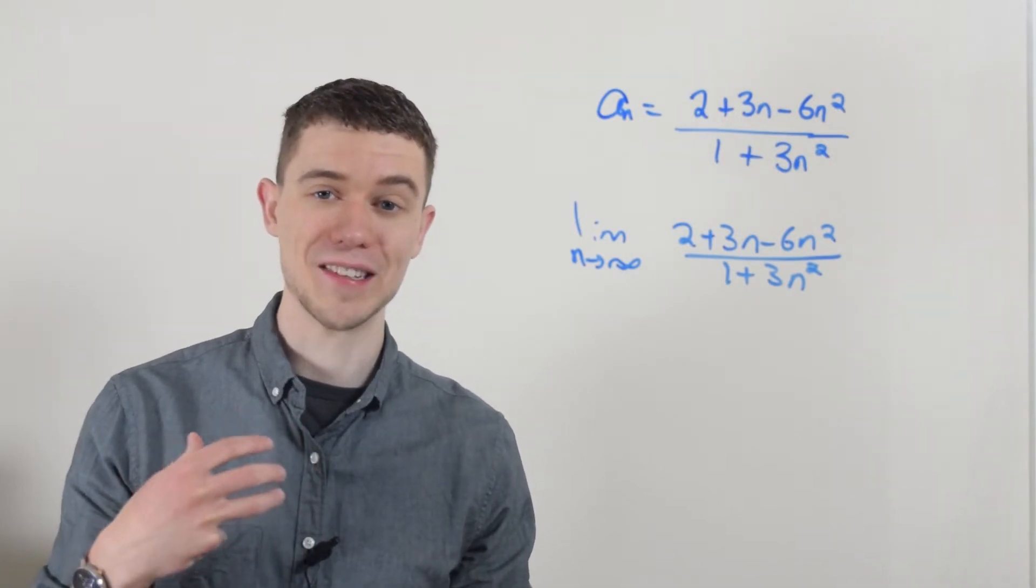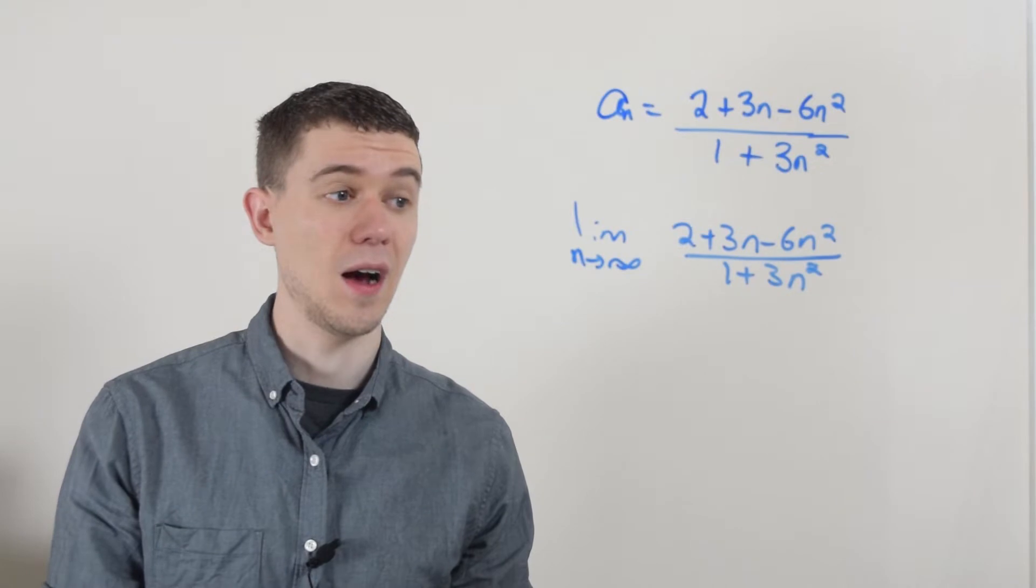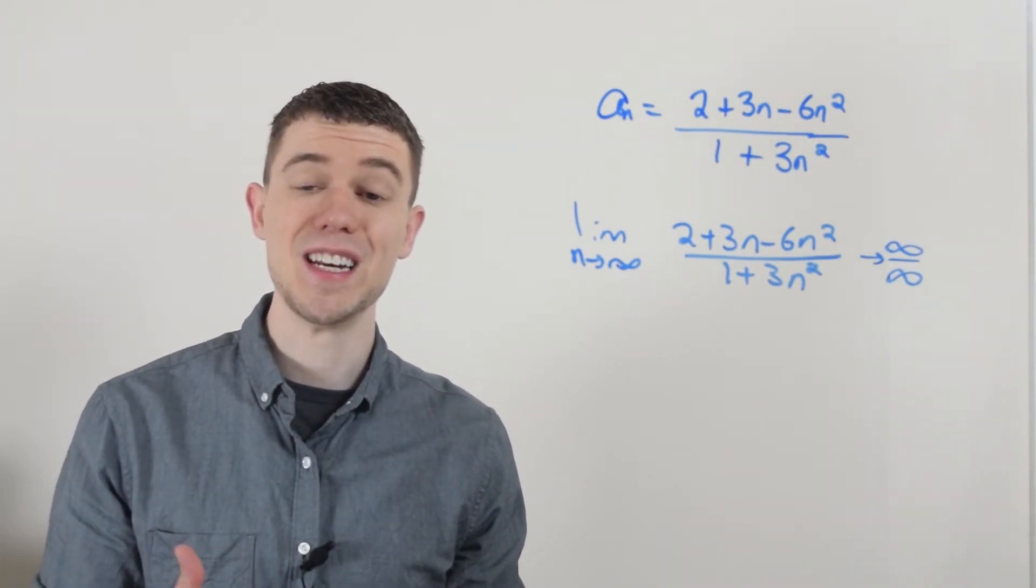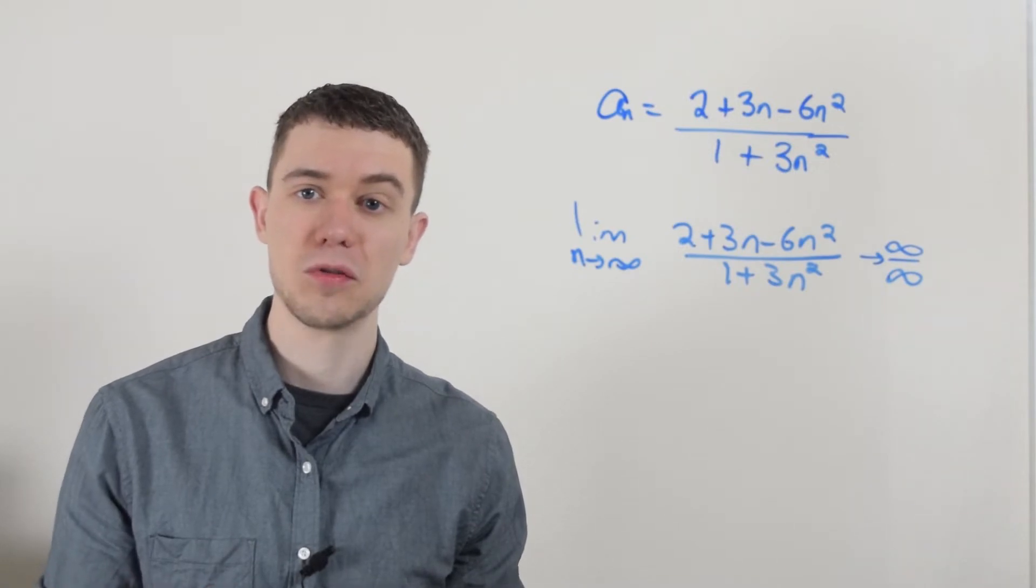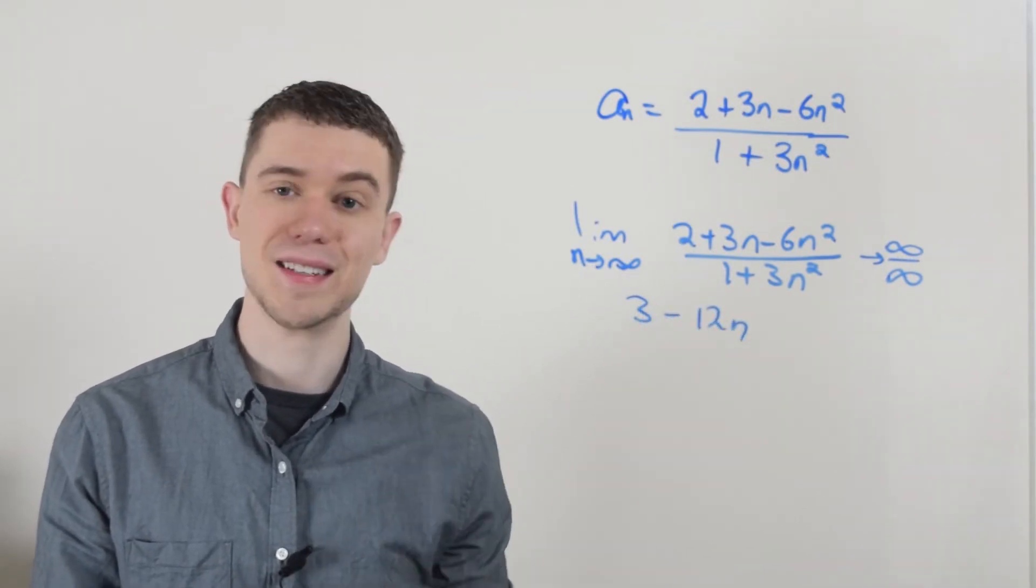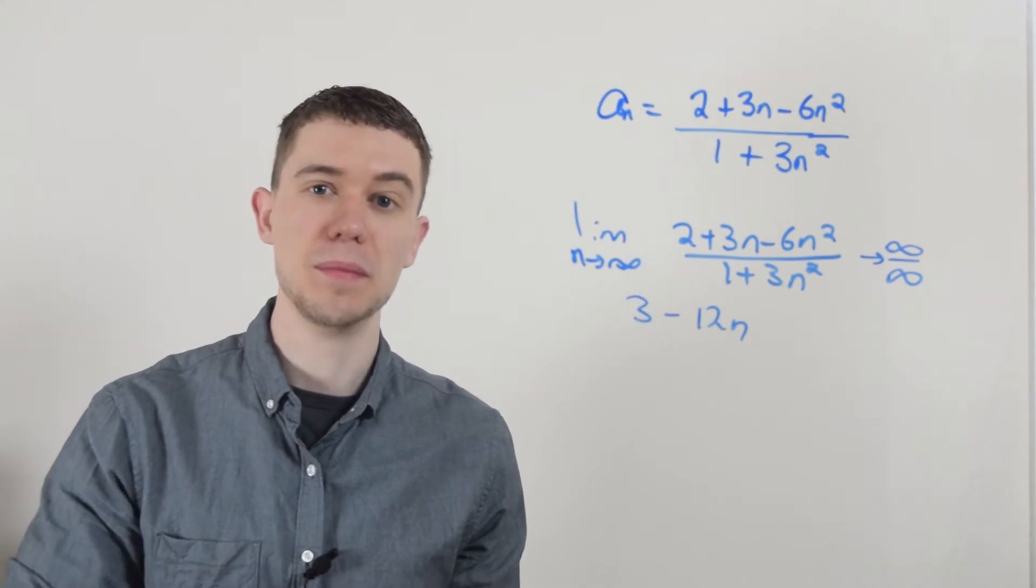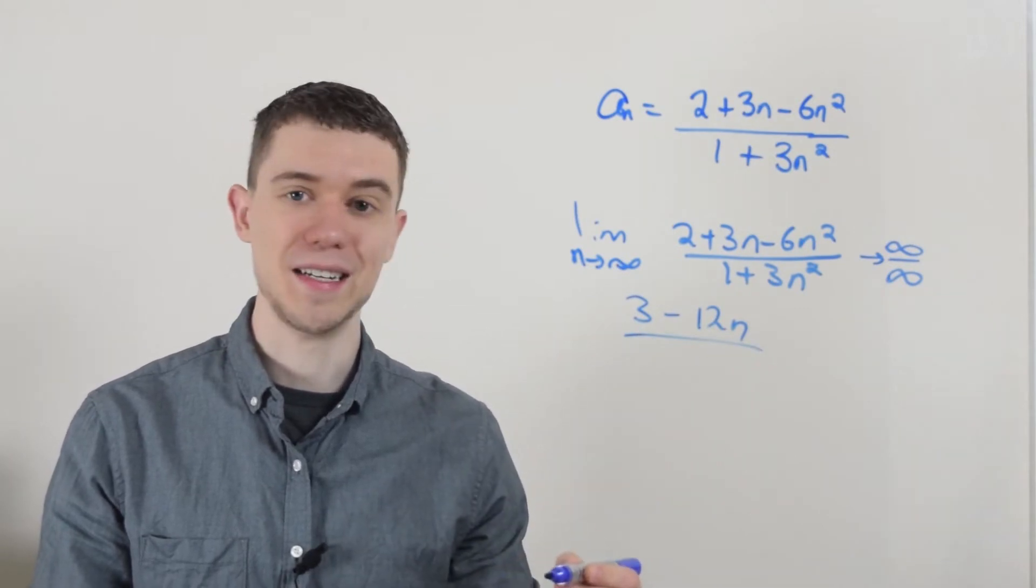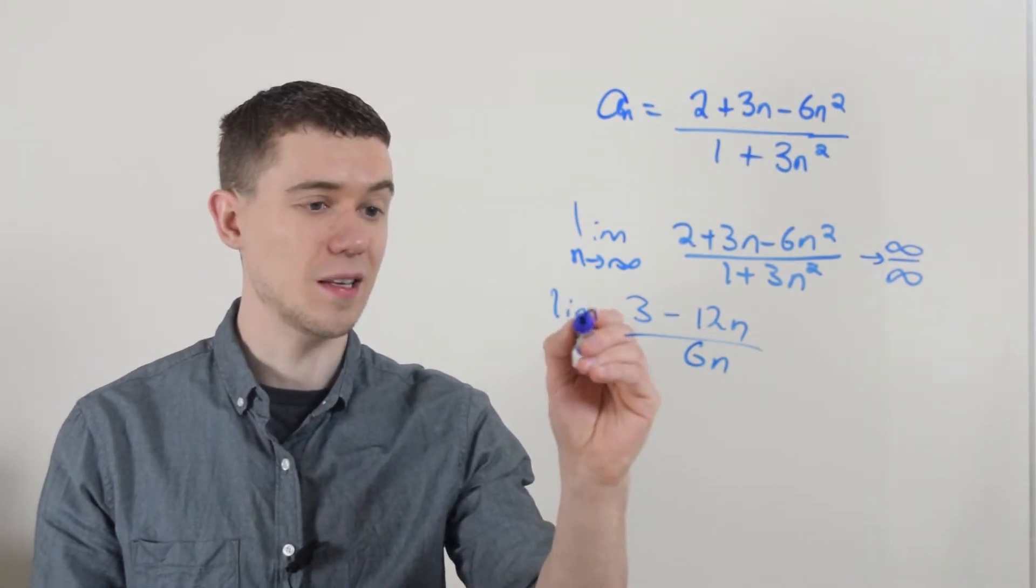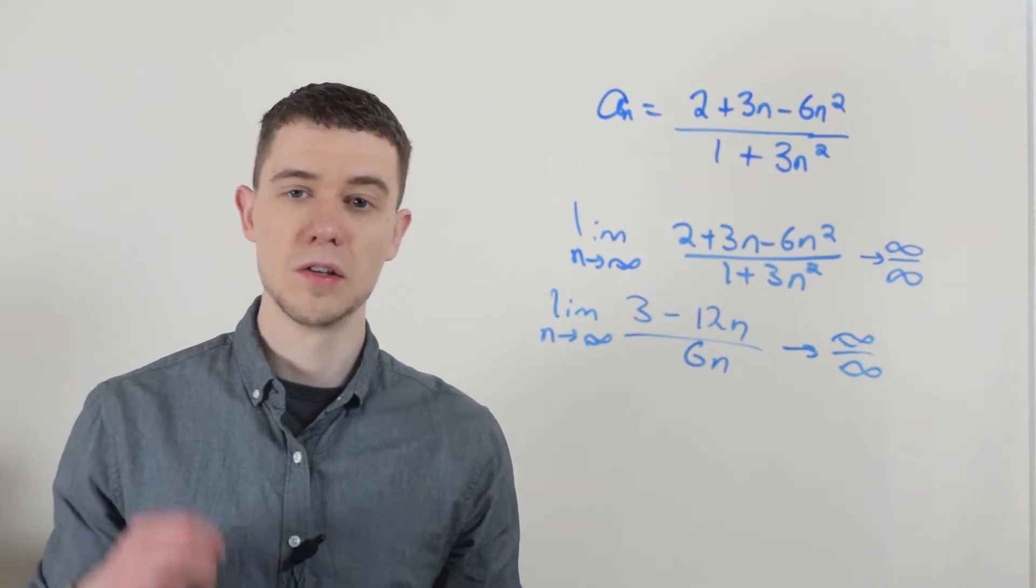Since this is a rational function, a polynomial in the numerator and denominator, you could use the rule of thumb if your teacher allows that. I'll just do it the longer way. If you take this limit, you'll quickly see we're going to get the indeterminate form infinity over infinity. When you get infinity over infinity, we usually do L'Hôpital's rule. L'Hôpital's rule says to take the derivative of the numerator, so this would just be 3 minus 12n. The derivative of a constant is 0. Then take the derivative of the denominator, that'll just be 6n.